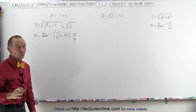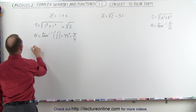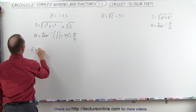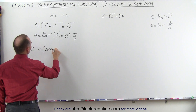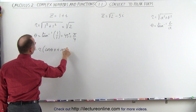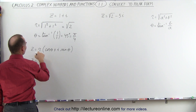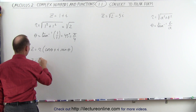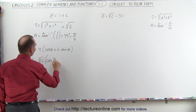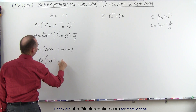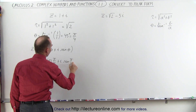Now we're ready to write this number in polar form. The general formula is that z is going to be equal to r times the cosine of theta plus i times the sine of theta. So in this case z can be written as r, which is the square root of 2, times the cosine of pi divided by 4, plus i times the sine of pi divided by 4.